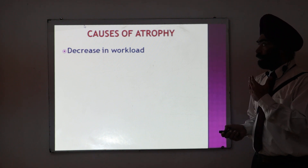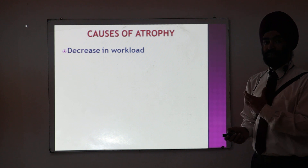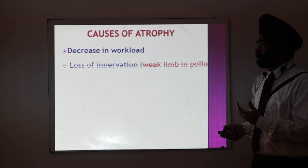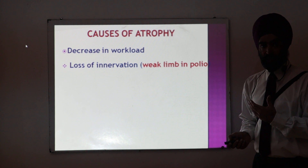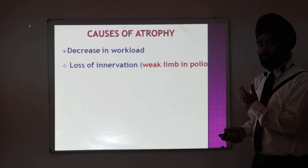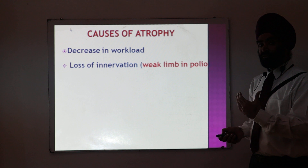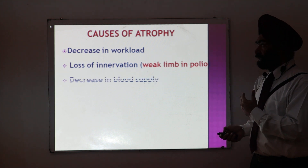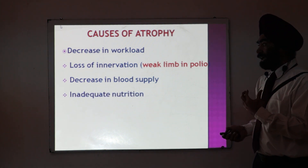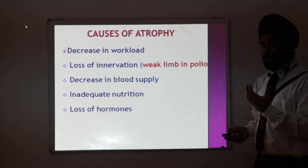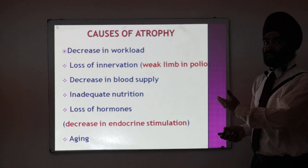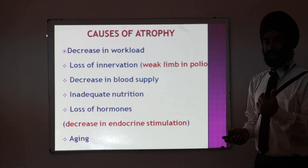Now what can be the reasons for atrophy? One very important reason is workload — if organs are not given any workload, they will undergo atrophy. For example, muscles that are not being used will shrink. Second, loss of innervation — a common example is a polio patient; the limb shrinks because nerve supply is reduced. Third, decreased blood supply also causes shrinkage. Fourth, lack of nutrition, absence of hormones causing decreased endocrine stimulation, or aging — these are different reasons that may lead to atrophy.